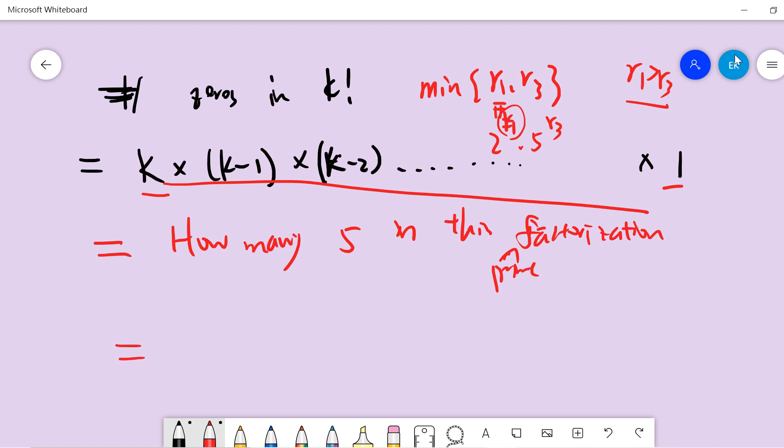The formula is k divided by 5 using the ceiling function, plus k divided by 25, and so on. If k is a multiple of 5, it contributes one five. But 25 will contribute two of them, and 125 contributes three. This is the formula we derived.